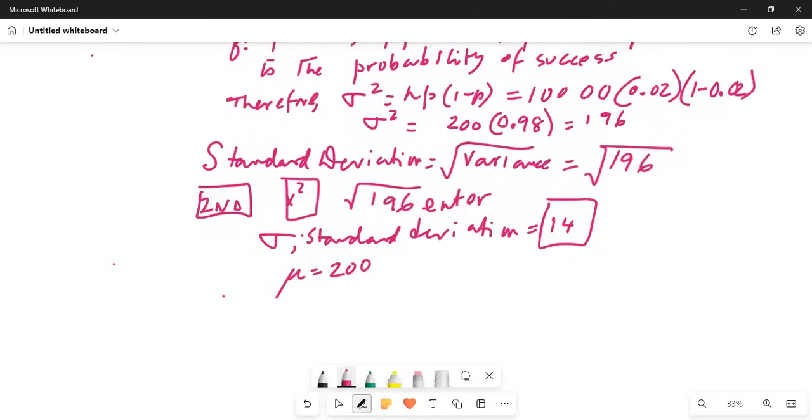If you do μ minus σ, is 200 minus 14, is 186. And μ plus σ is 200 plus 14, is 214. What does it mean?